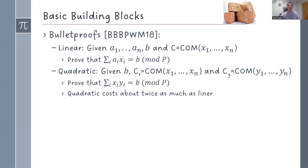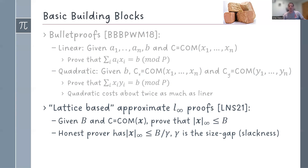Let's start with the building blocks. One building block is bulletproofs, and we use it to prove linear and quadratic relations. Linear relations, we have a committed vector, we have a public vector, and we need to show that their inner product is some public value B. Quadratic proofs are very similar, except now we have two committed vectors, and we need to show that their inner product is some public value B. Roughly speaking, quadratic proofs cost about twice as much as linear, and the reason for that is that you just commit to twice as many values.